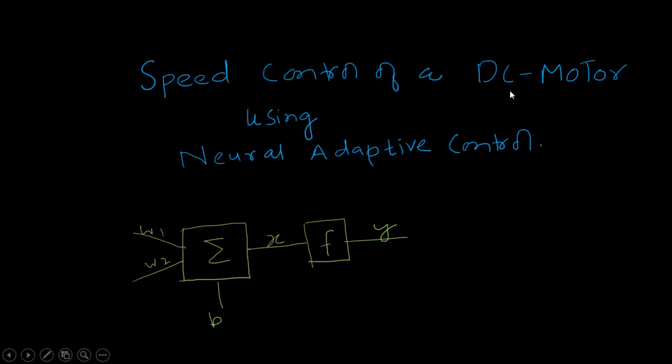Hello everyone, I'm Arqif and today I will give you an overview about the speed control of a DC motor using neural adaptive control, or in other words we'll be using the artificial neural network to control the speed of a motor.